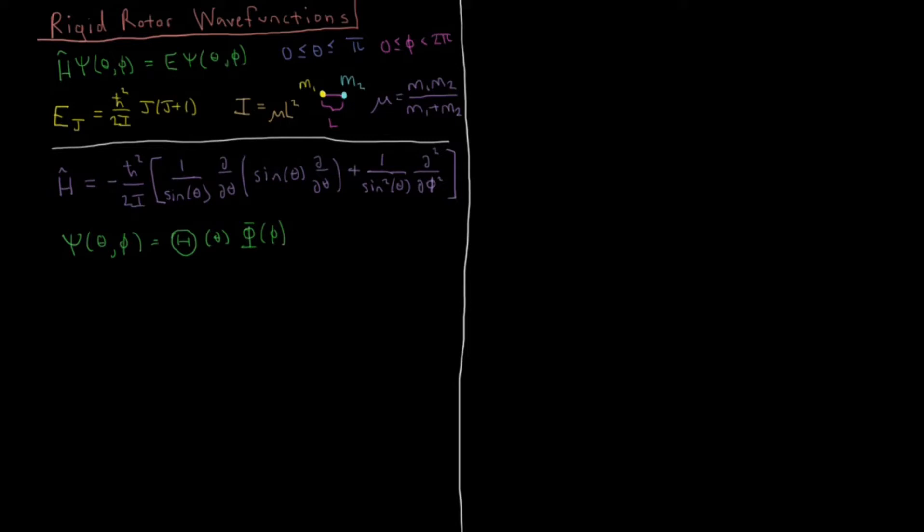So the standard procedure that we use in this case is separation of variables. So just for the sake of not being completely black box, I'll write out what we get when we do separation of variables. We get that sine theta over big theta times the ordinary derivative of theta, times sine of theta times sine of theta d big theta with respect to the variable theta.